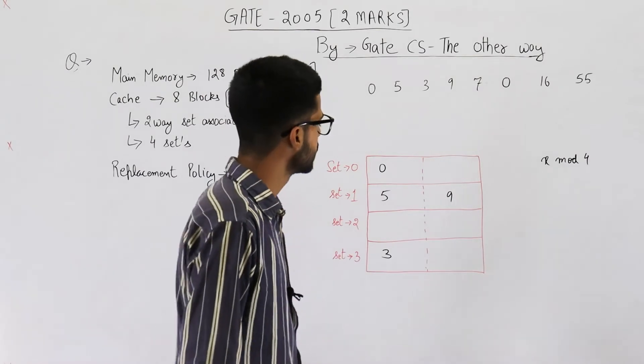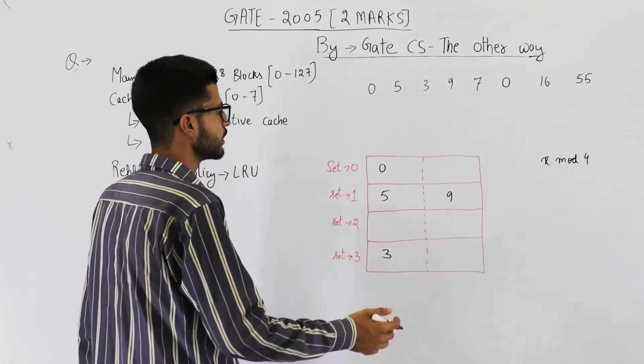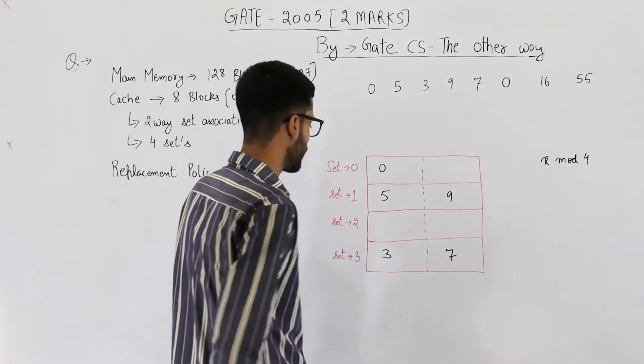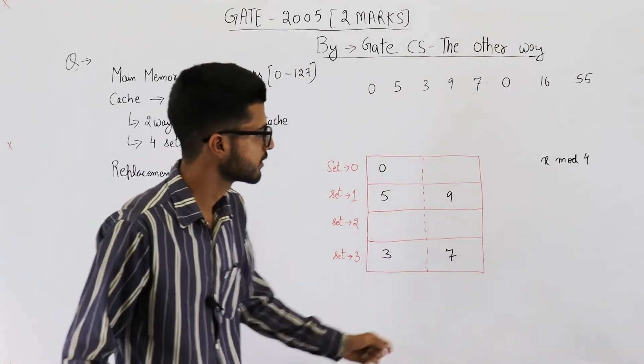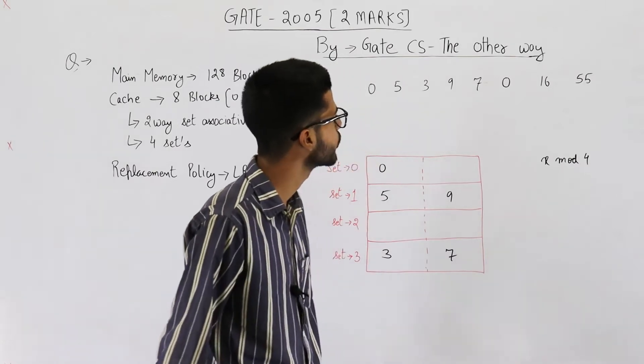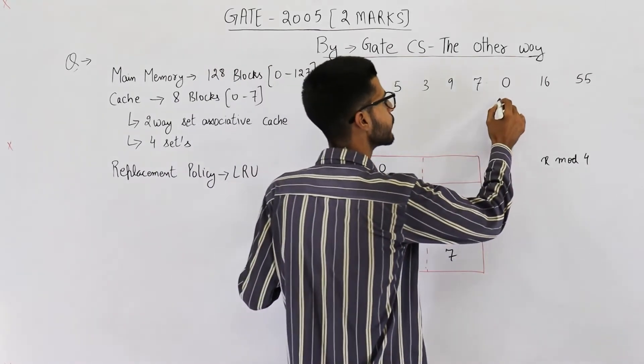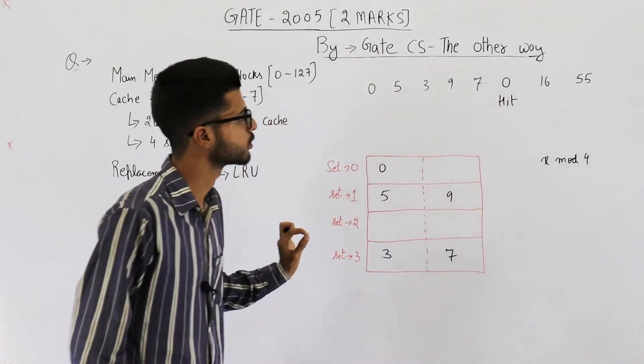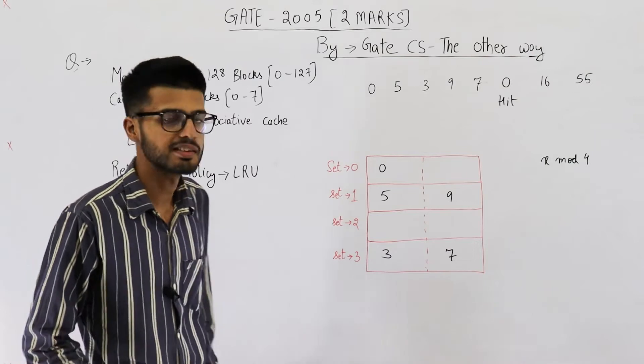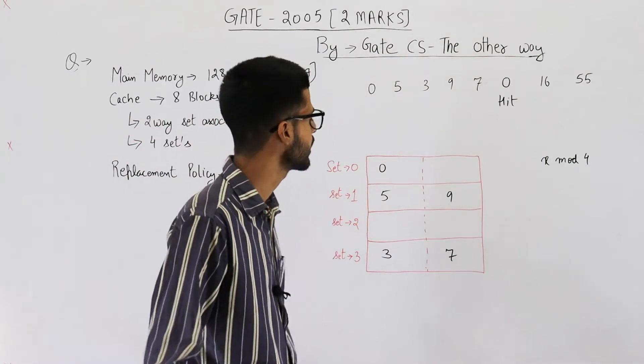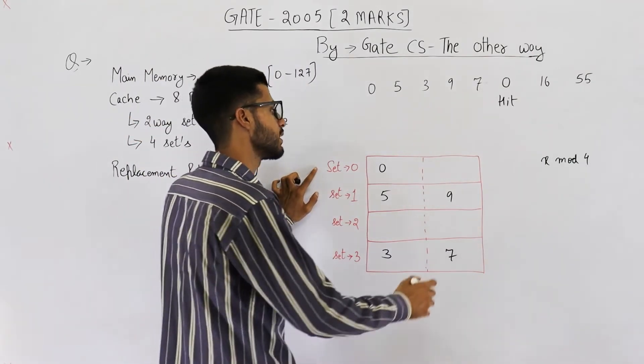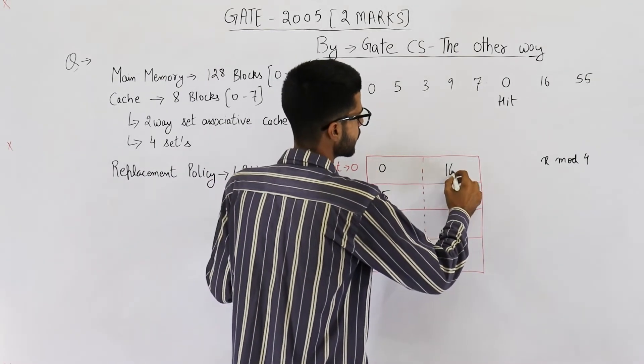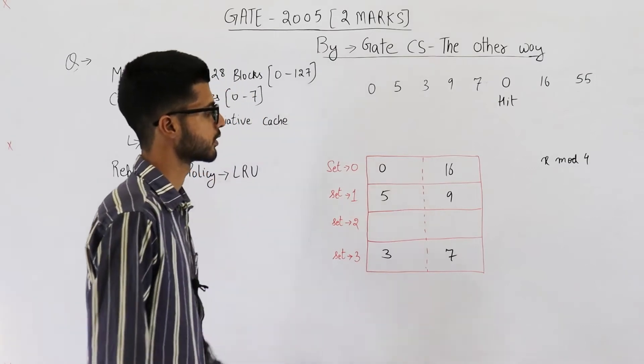So, next one is 7. 7 will be, 8 will be here. That means 7 has to be here. 7 mod 4, 7 mod 4 will be 3. Next one is 0. So, this is a hit. We have got our first hit. Nothing needs to be done in this case. Next one is 16. 16 mod 4 is 0. That means 16 goes into set 0. Already, first line of set 0 is filled. So, we'll place it in second line. So, 16 goes here.